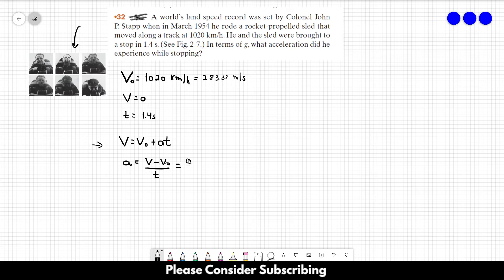So let's replace the variables by the numbers. The final speed is zero. The initial one is 283.33. And the time is 1.4.